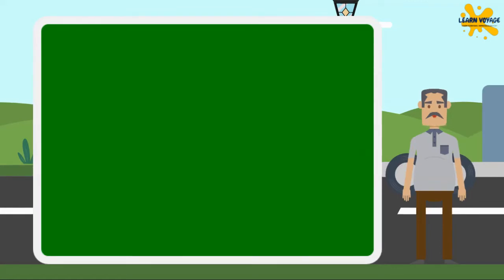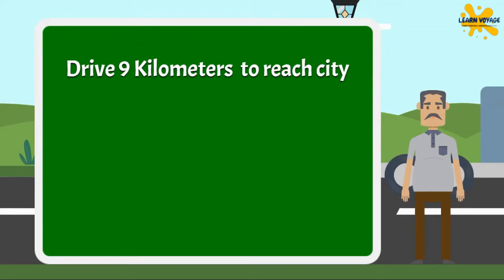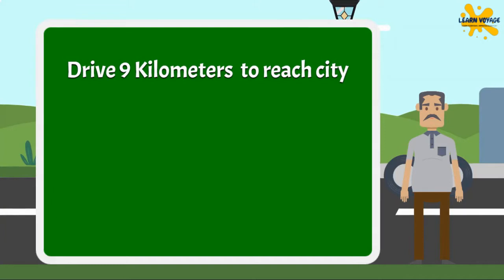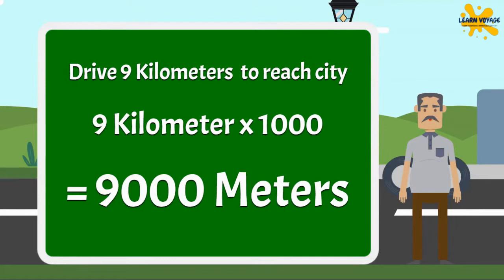To reach the nearest city, I must drive 9 kilometers. As I said, 1 kilometer is equal to 1000 meters. We must multiply the value in kilometers by 1000. So to get the value in meters, 9 kilometers multiplied by 1000 is equal to 9000 meters.